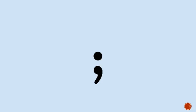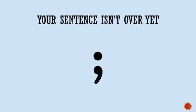A semicolon is a stronger stop than a comma, but not as strong as a period or full stop. It tells the reader your sentence isn't over yet. But this isn't a clear enough explanation to understand when to use a semicolon in academic writing.